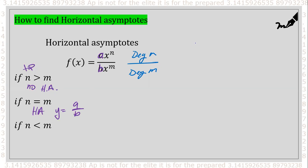Think about it like this: if you have 2x² over 4x², these terms rise at the same rate, so you're left with just the coefficients — 2 over 4, which reduces to one half. So y equals one half would be your horizontal asymptote. That's your ratio of a over b.